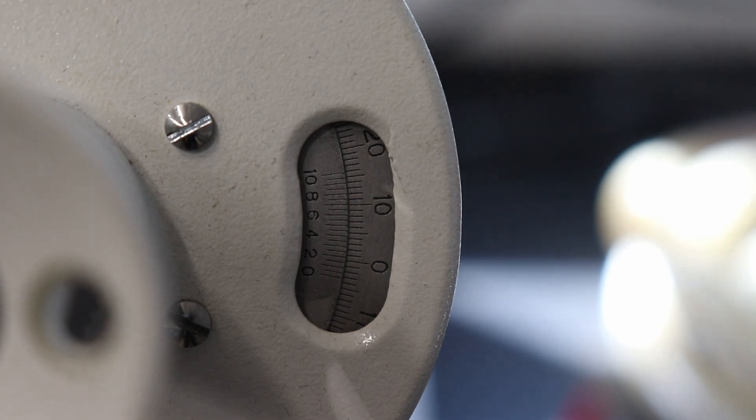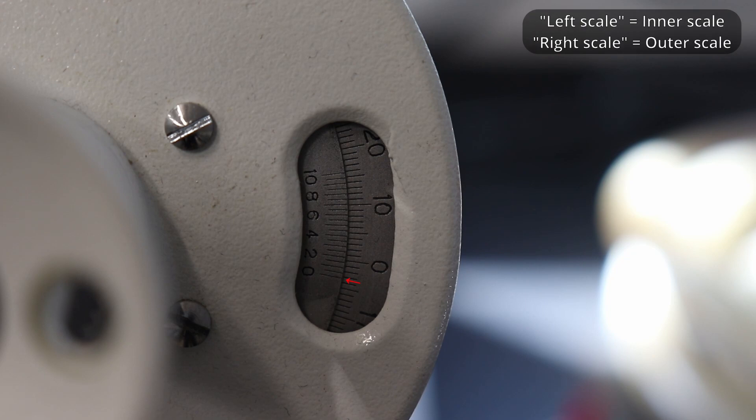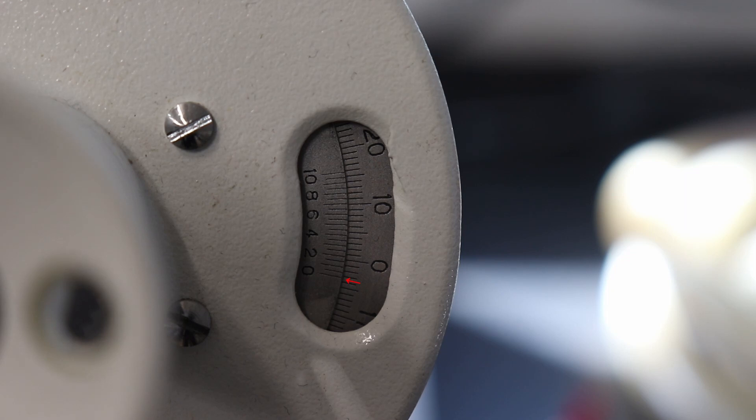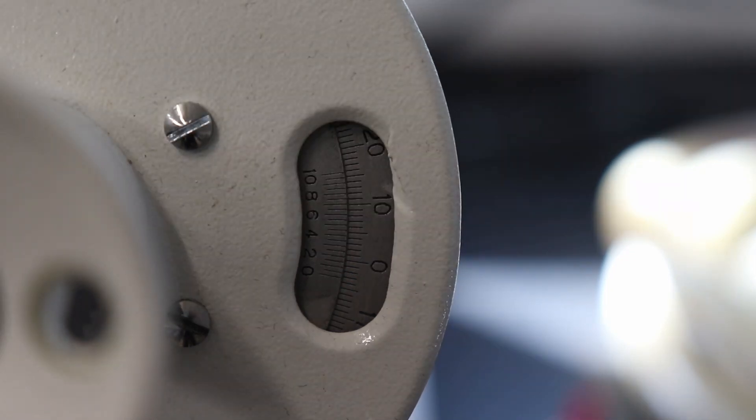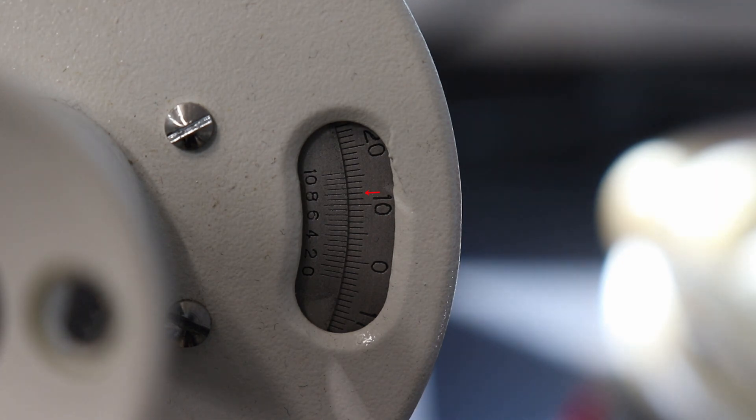To read the vernier scale, first look at the zero on the left scale and where that lines up with an integer value on the right scale. In this case, negative 3 since we're below the zero. And then to read the decimal place, look at both scales and where the two graduations meet perfectly will read the decimal off the left scale. In this case, the value is 8.